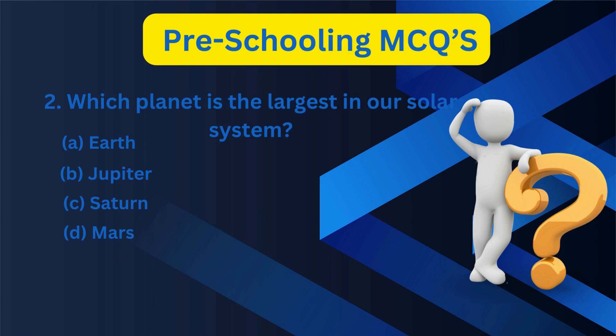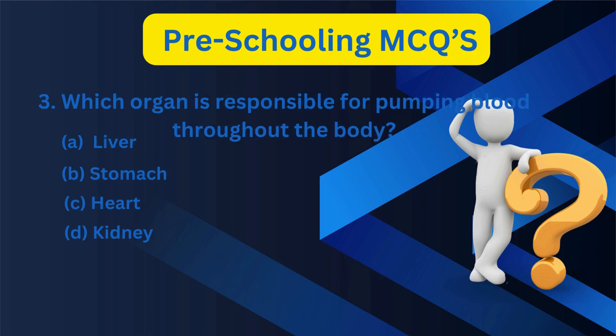2. [What is the largest planet in our solar system?] A. Earth, B. Jupiter, C. Saturn, D. Mars. B. Jupiter.